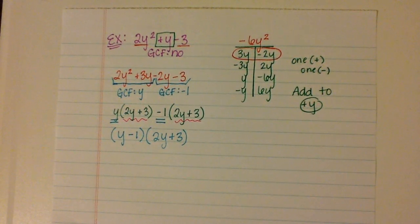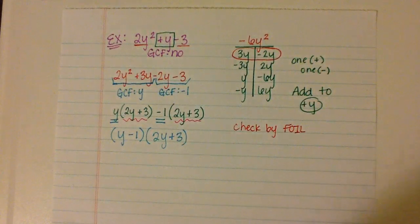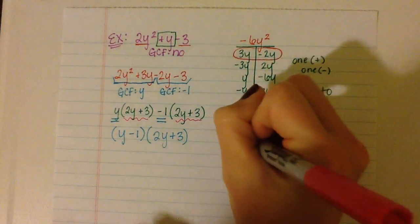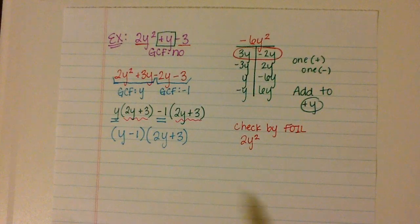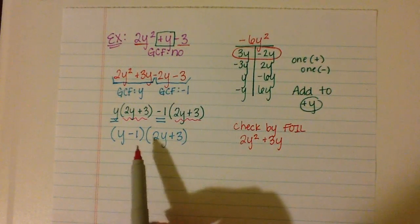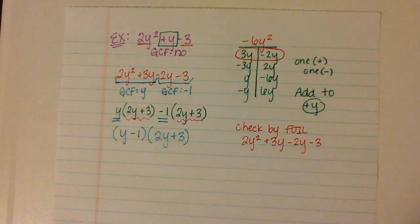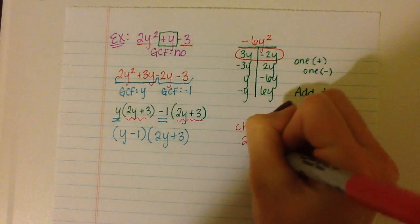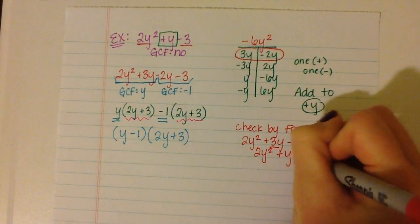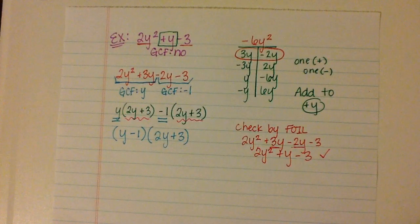So if we combine, we have (y minus 1) times (2y plus 3). Let's check by FOIL: first y times 2y gives 2y squared; outside y times 3 is plus 3y; inside negative 1 times 2y is minus 2y; last negative 1 times 3 is minus 3. Combining like terms: 2y squared, then 3y minus 2y is plus y, and minus 3. Does that match what we started with? Yes it does. So this would be your final answer.